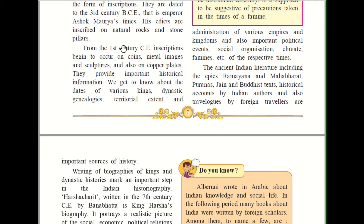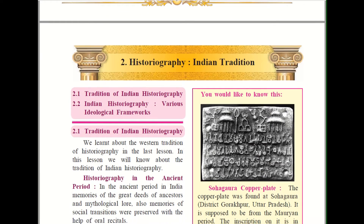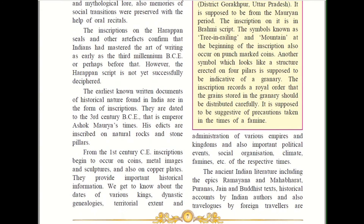From the 1st century CE, inscriptions began to occur on coins, metal images, sculptures, and also on copper plates. They provide important historical information. We get to know about the dates of various king dynasties — dynasty means rulers of a country — and genealogies, territorial extent and administration of various empires and kingdoms, as well as important political events, social organization, climate, famines, and so on of the respective times.